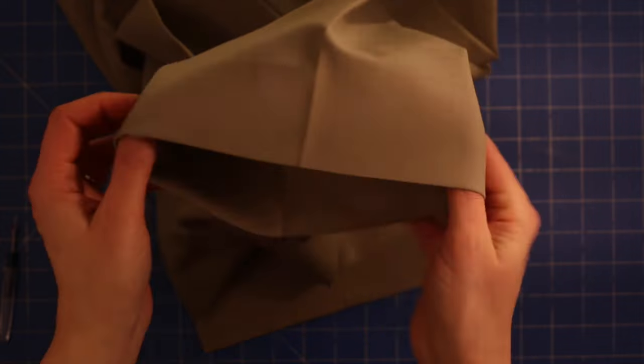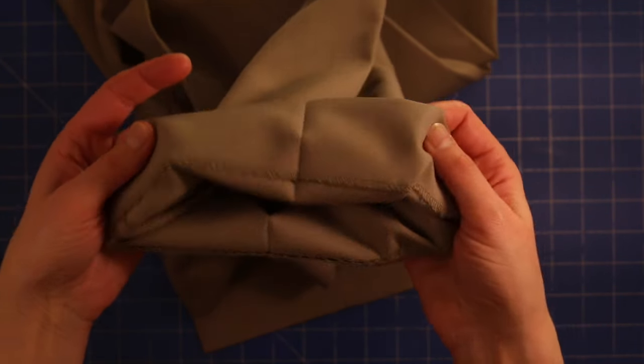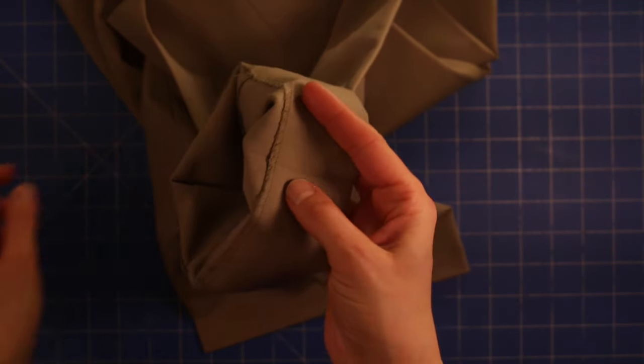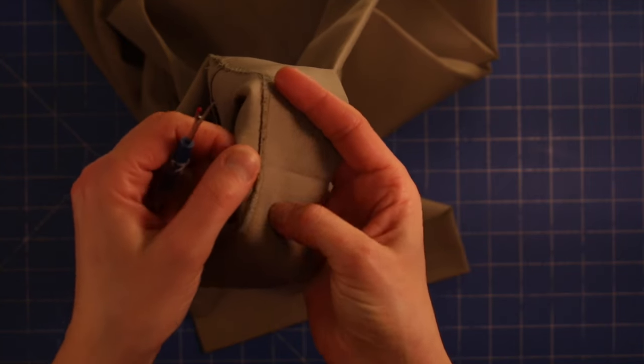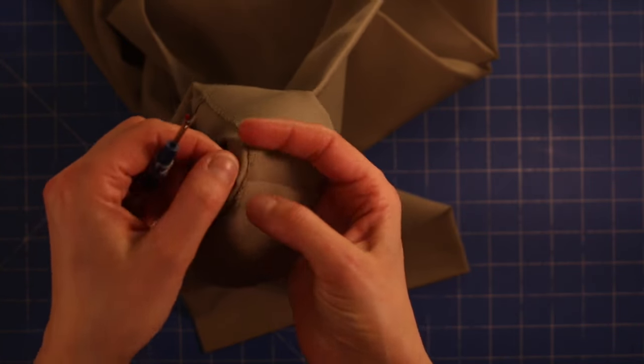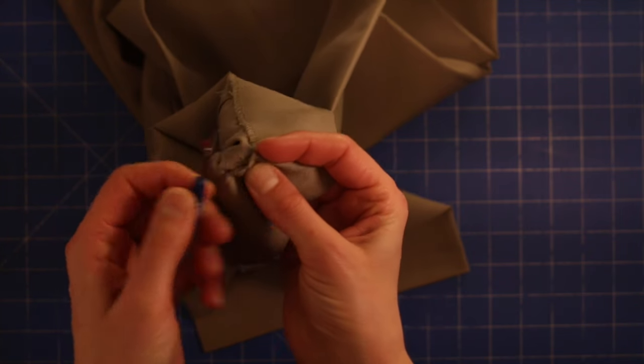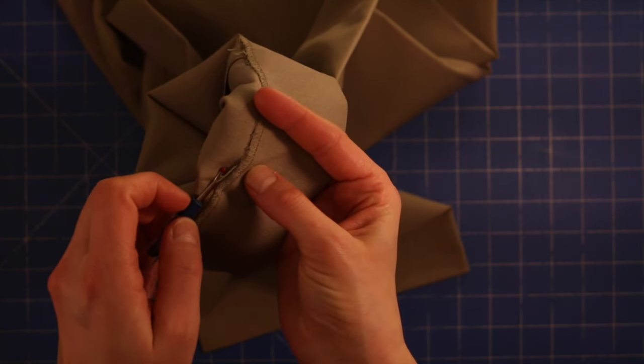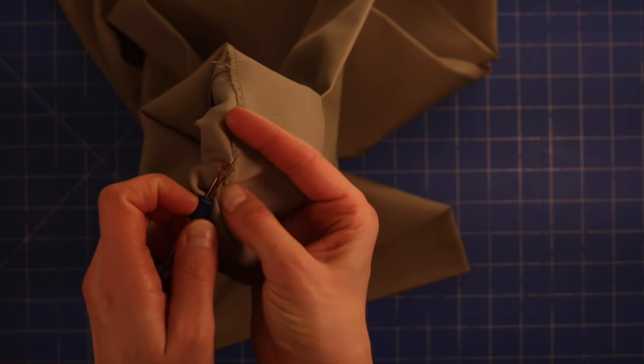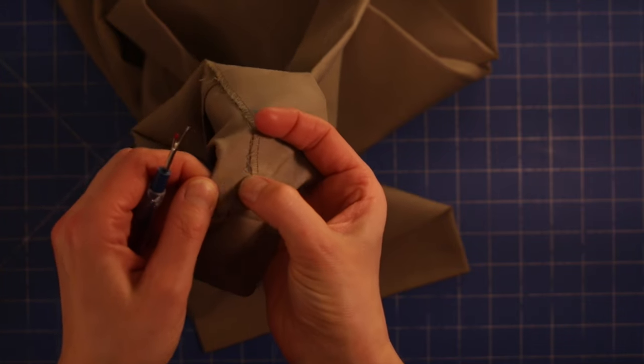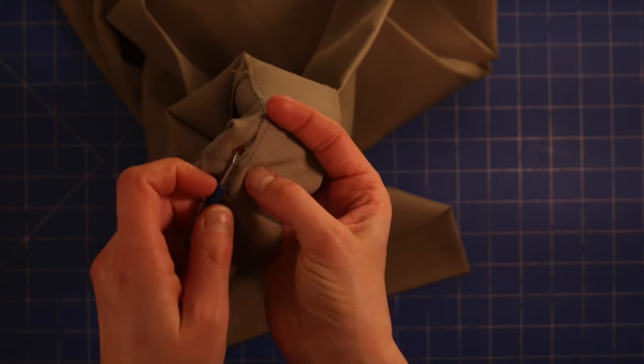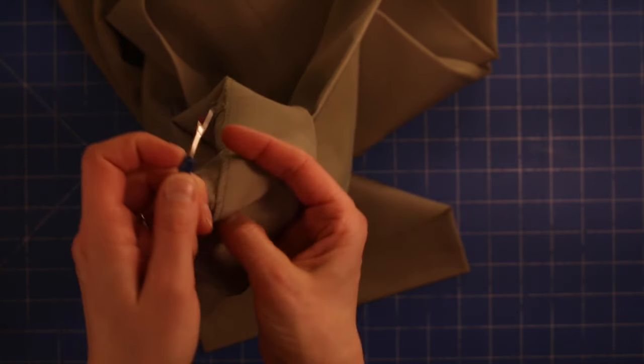First off, you'll need to grab the pants that you want to hem and unpick the current hem that's already there. Grab your quick unpick and go through and unpick all those stitches on both legs.